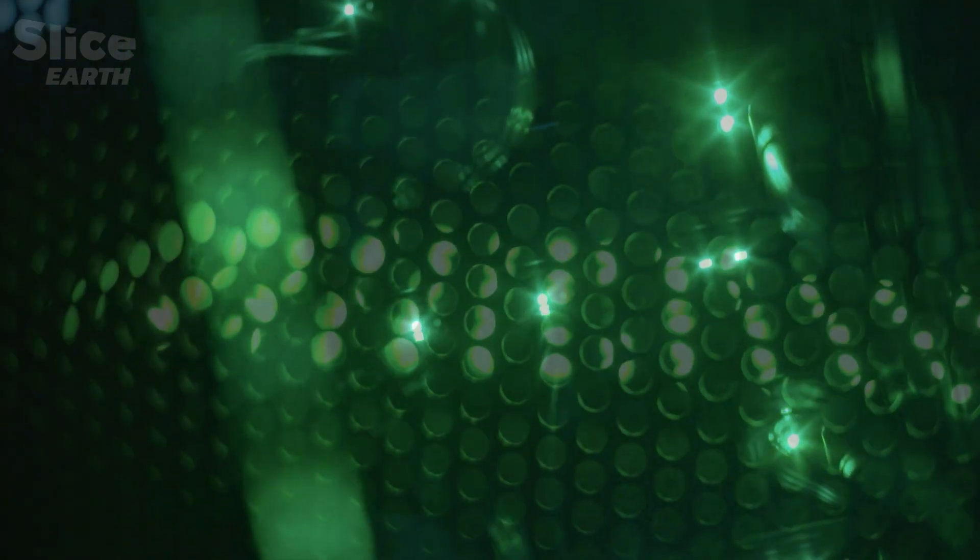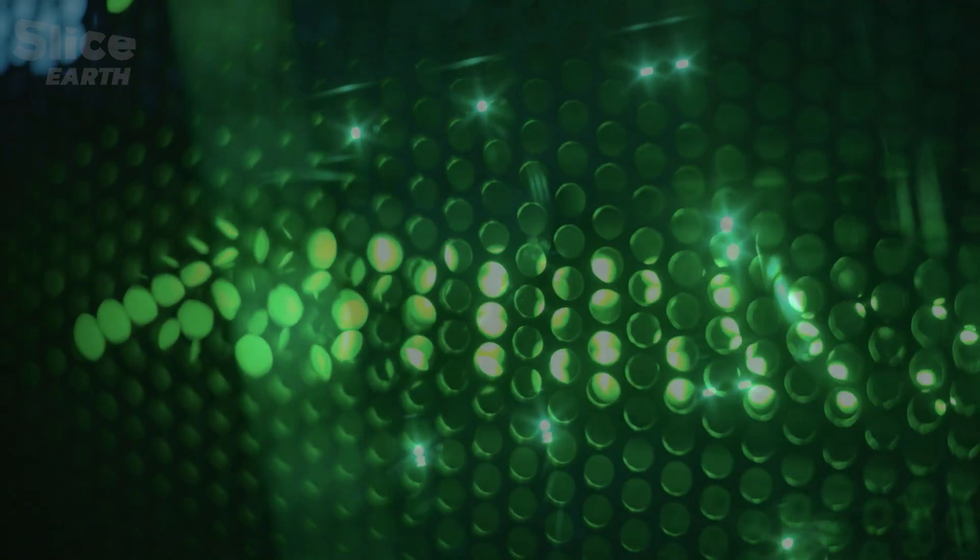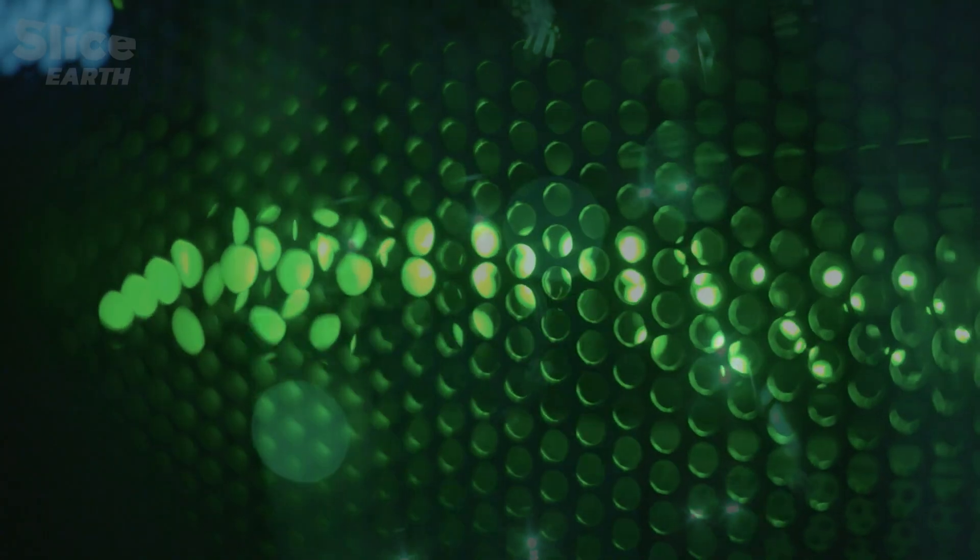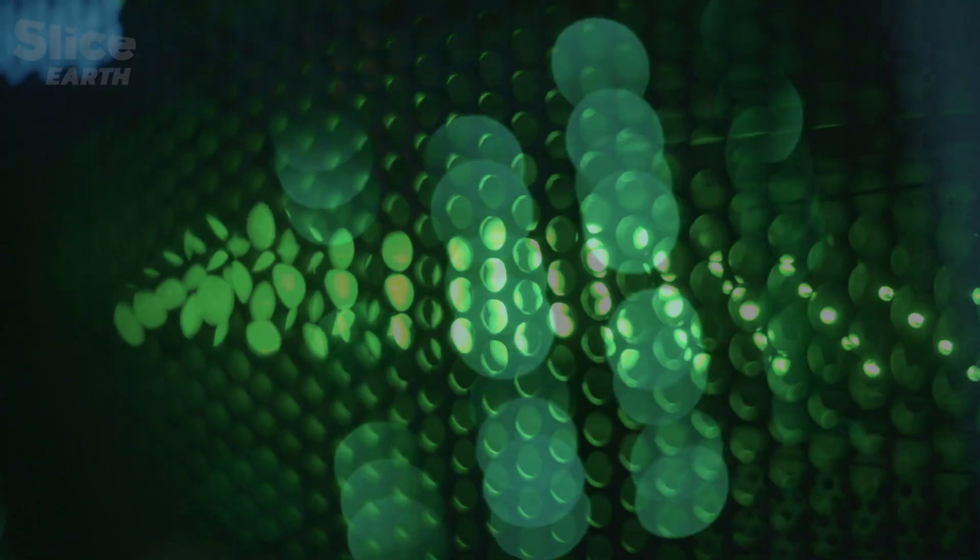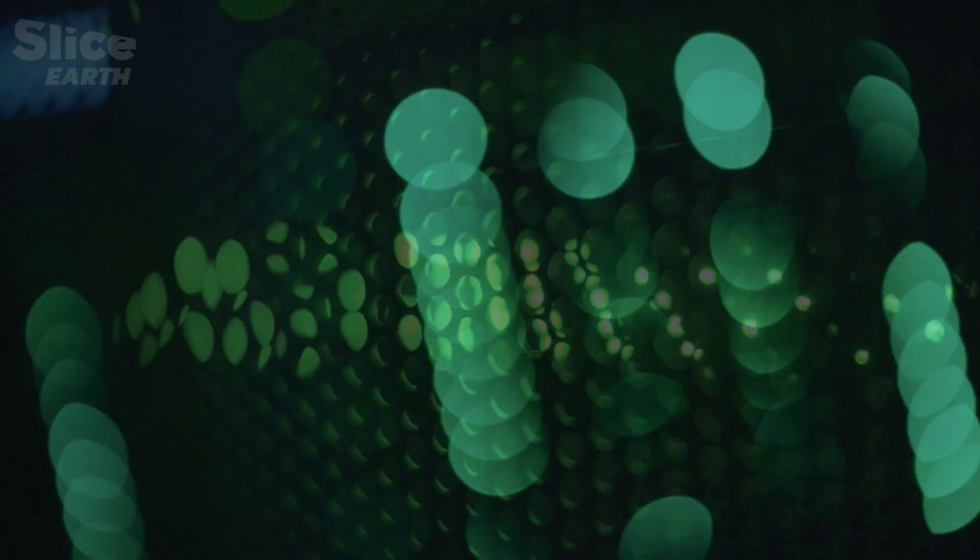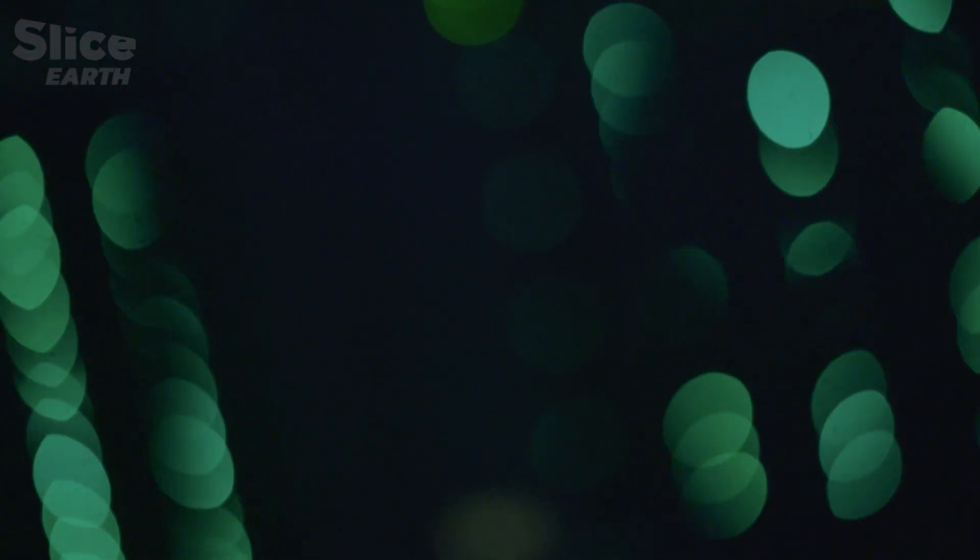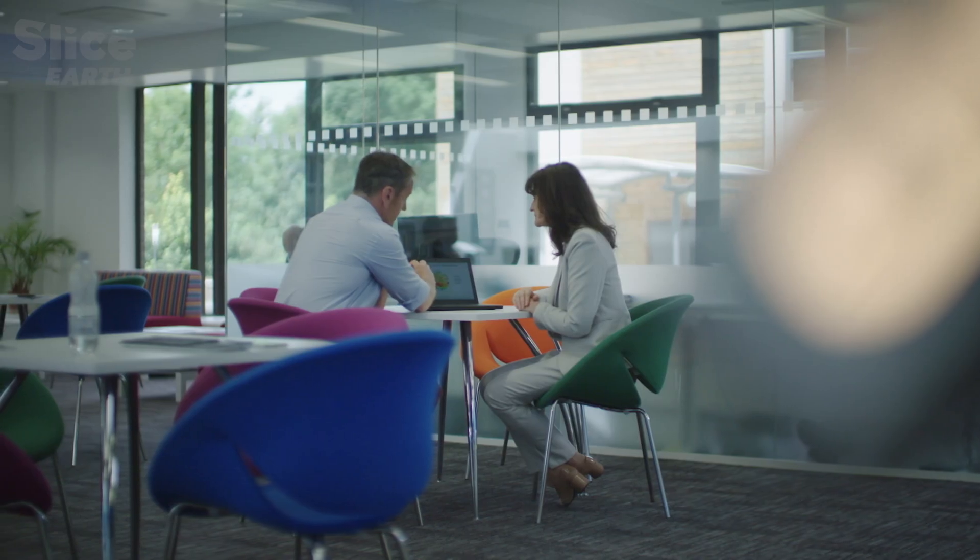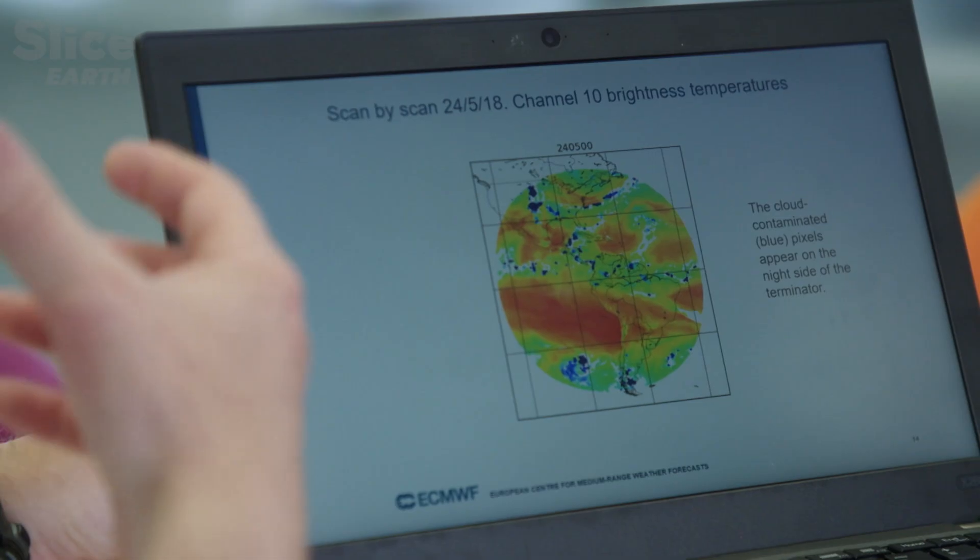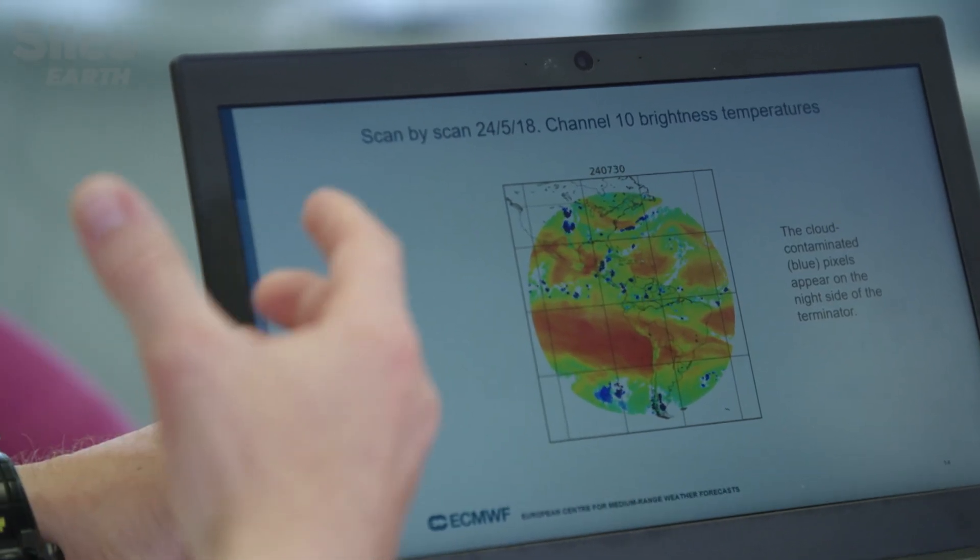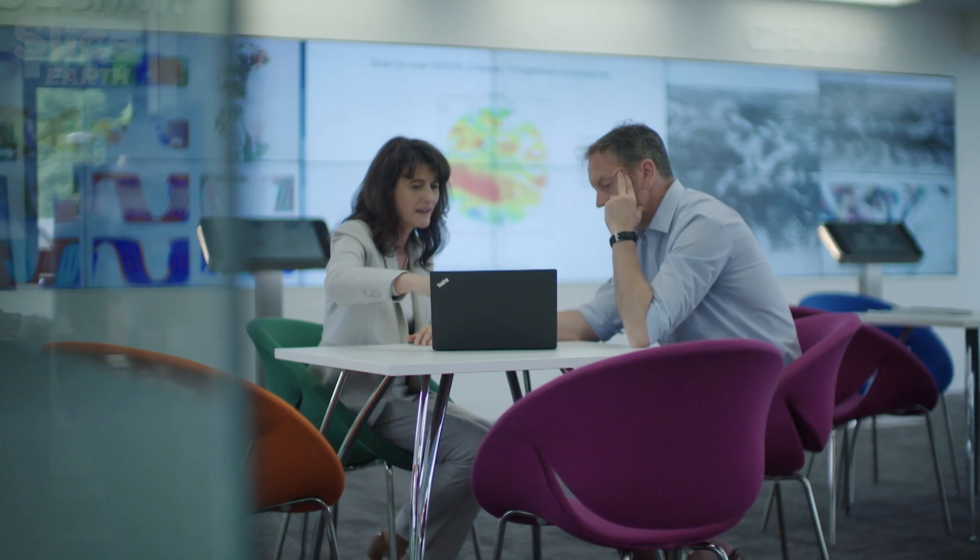Nowadays, computers are some of the most important tools used by scientists. The billions of calculations they are able to make helps better quantify interactions between the Earth, the atmosphere and the oceans. But some phenomena are still not very well measured, which results in lower quality predictions.